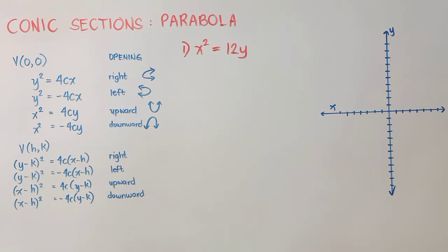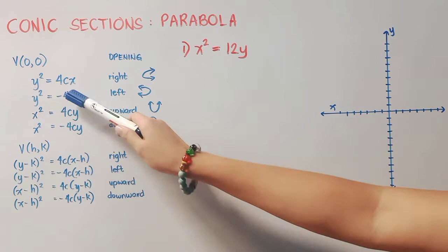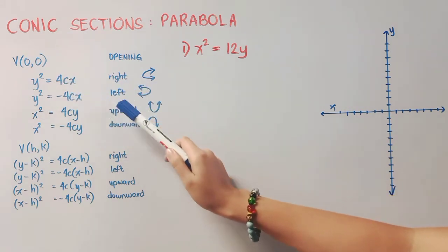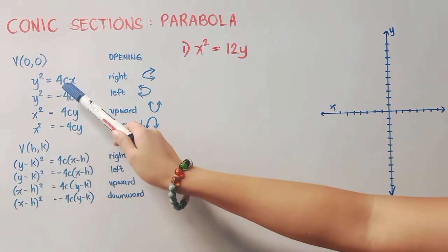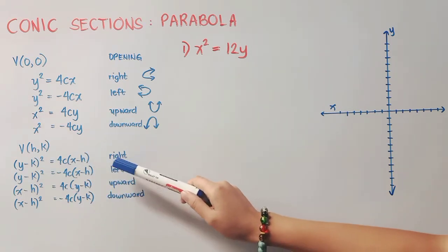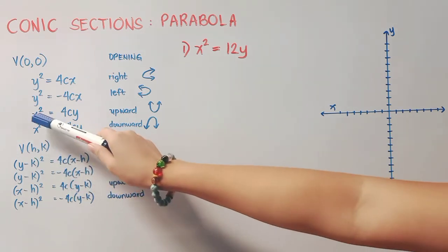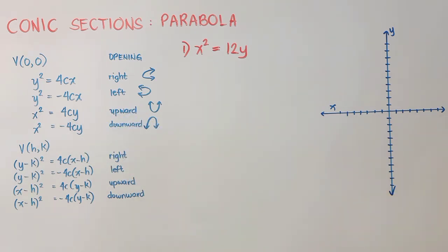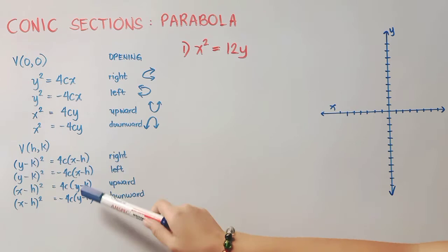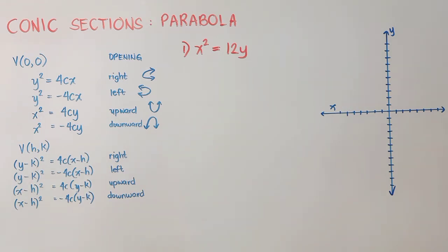Noticing the forms, we have y² and x². If y² is positive, the parabola opens to the right; if it's negative, it opens to the left. The same applies for the (h, k) form — we just place k and h accordingly. For x², if it's positive, the parabola opens upward; if it's negative, it opens downward. The same rule applies to the (h, k) form with h and k placed appropriately.